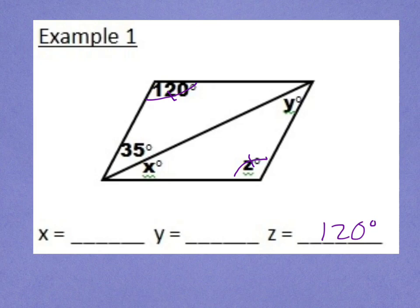Additionally, I can use the fact that I know that the opposite sides of the parallelogram are parallel. This creates alternate interior angles. Because of that, my angle y here is congruent to the 35 because it's an alternate interior angle. So, y is 35 degrees.